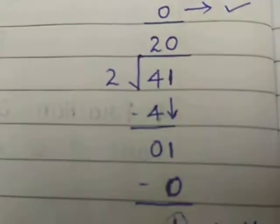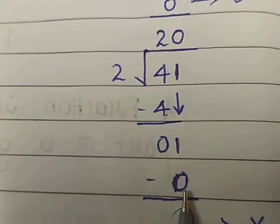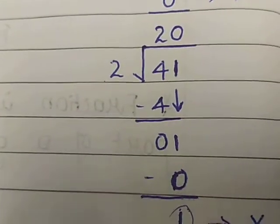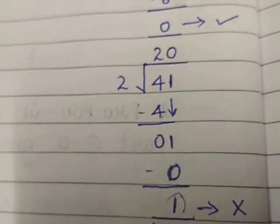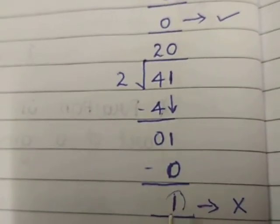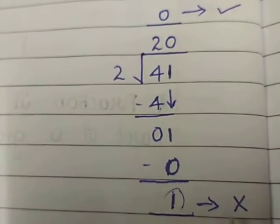Now taking a 2-digit number, 41. 2 times 2 is 4; the next digit is 1. Does 1 appear in the 2 times table? No. So 2 times 0 is 0, and 1 minus 0 gives remainder 1. We are not getting remainder 0, we are getting remainder 1. So 41 is not an even number.